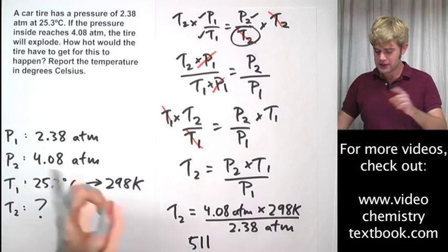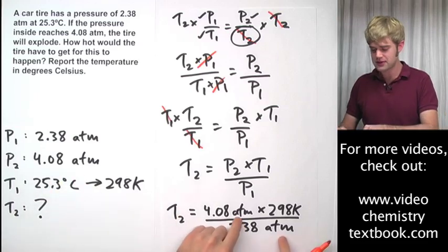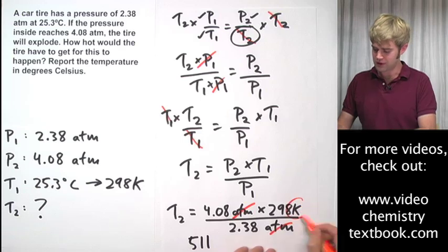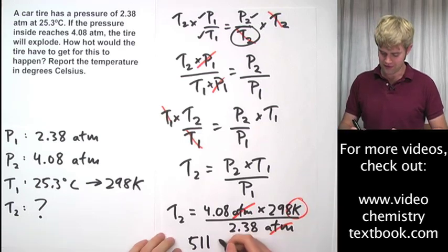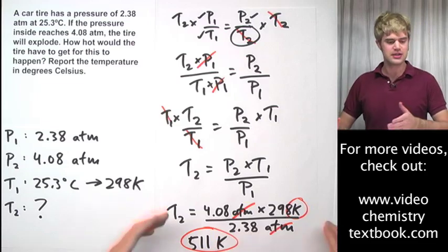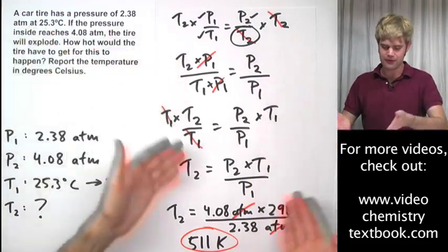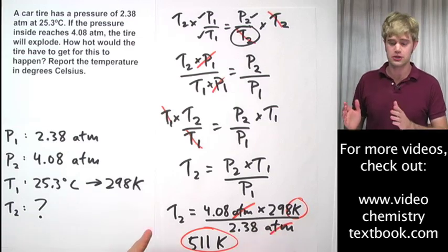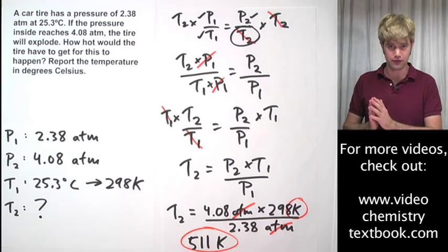What are my units? Well, it depends what cancels out here. ATM on the top, ATM on the bottom, they both cancel out, I'm left with Kelvin. So it's going to be 511 Kelvin. And that makes sense because we said that we were looking for a temperature. Obviously T2 is going to be Kelvin, it's going to be a temperature, but it's still important to cancel these units just so we can make sure that we set everything up carefully.